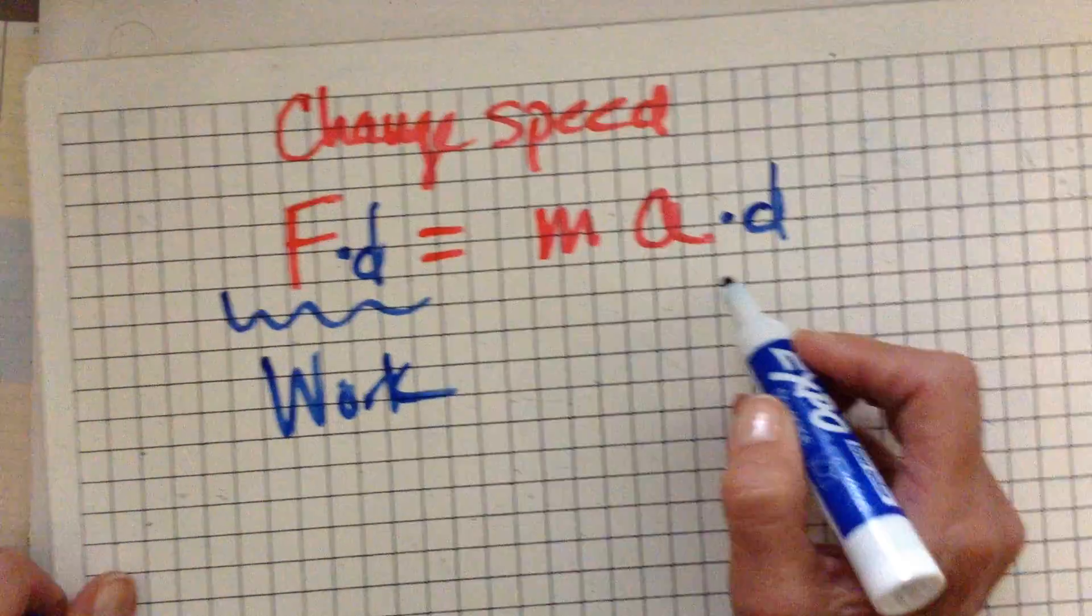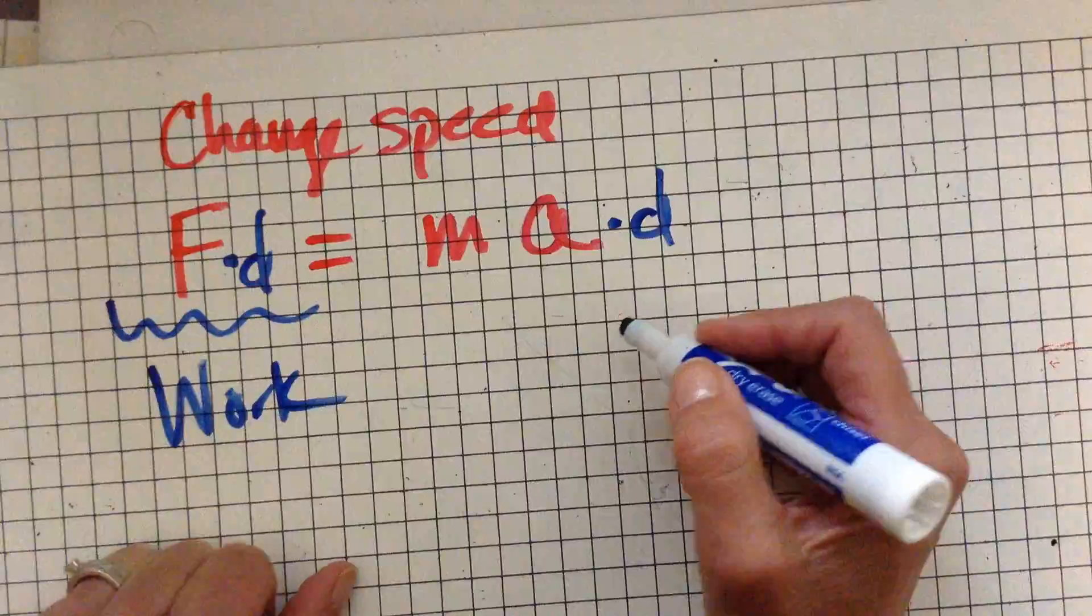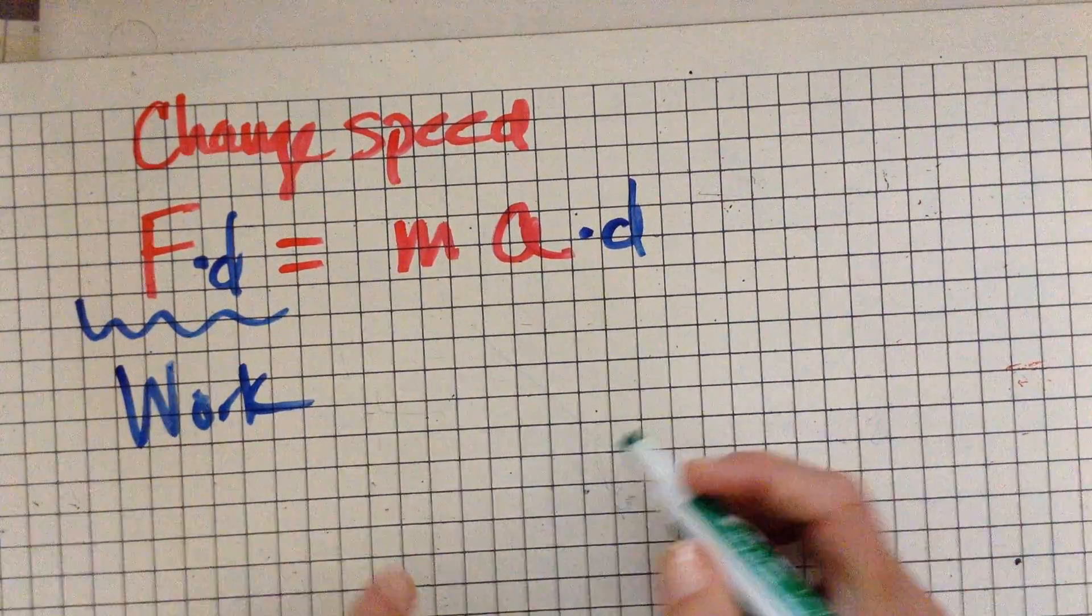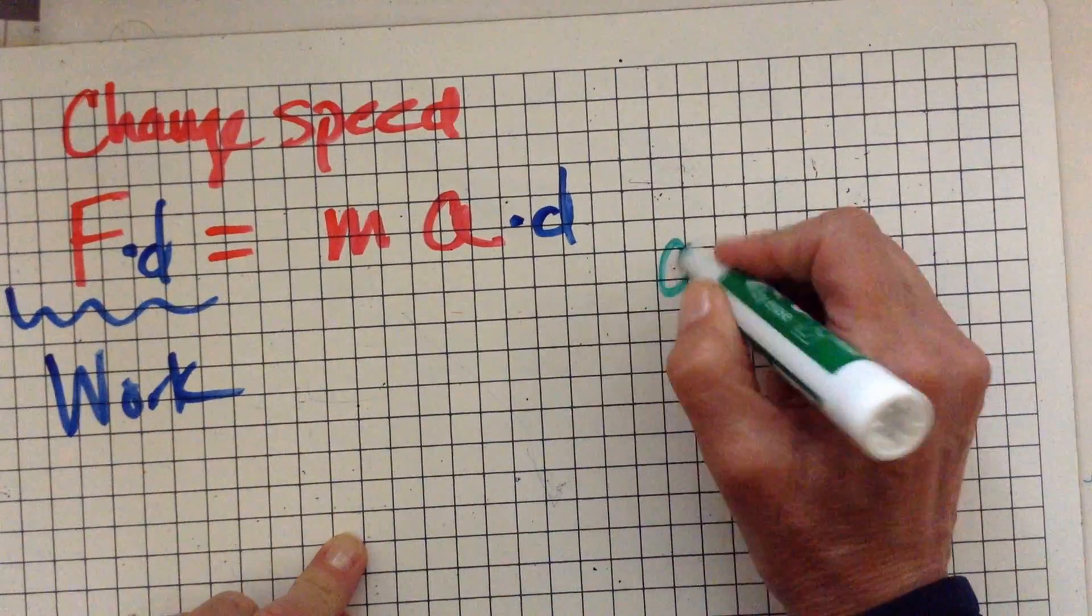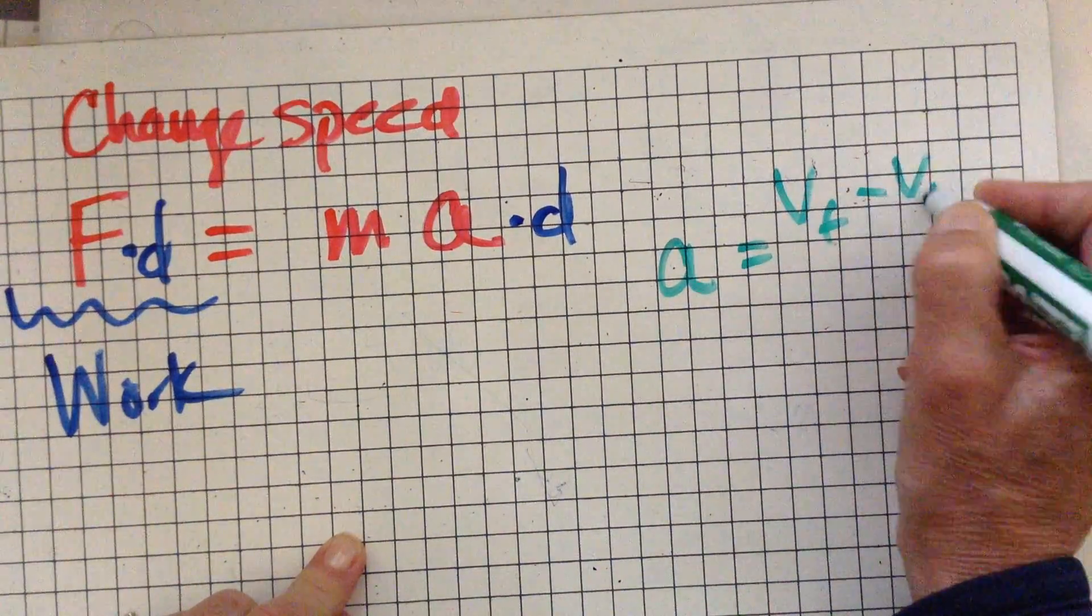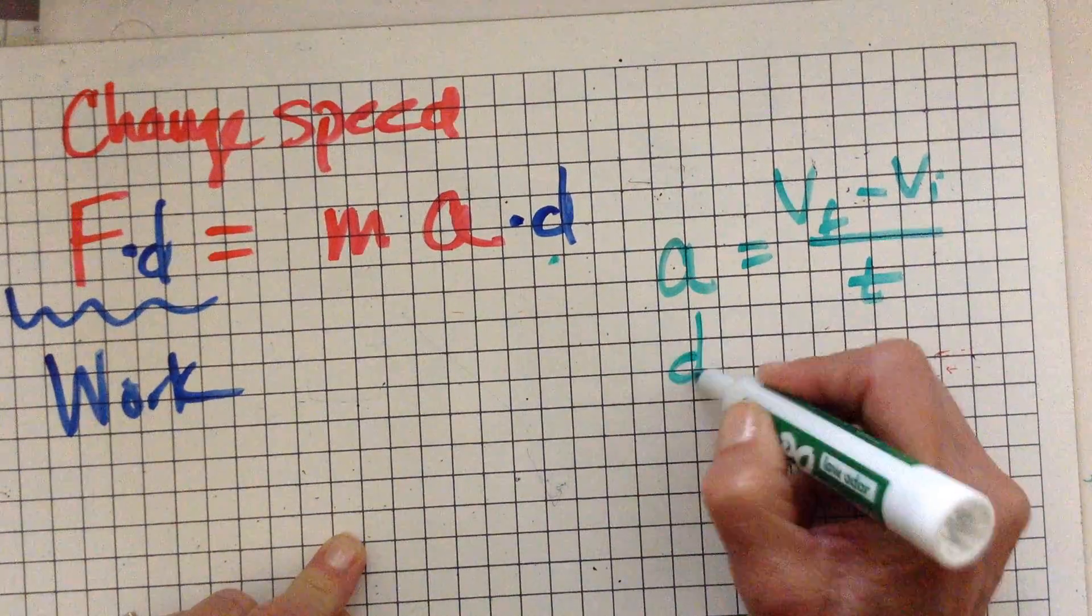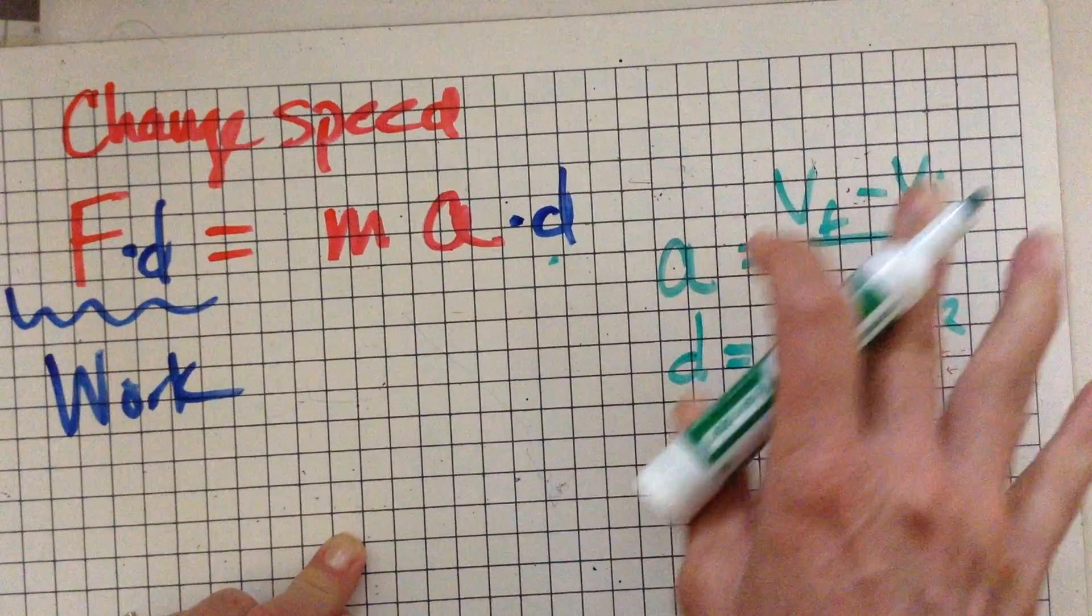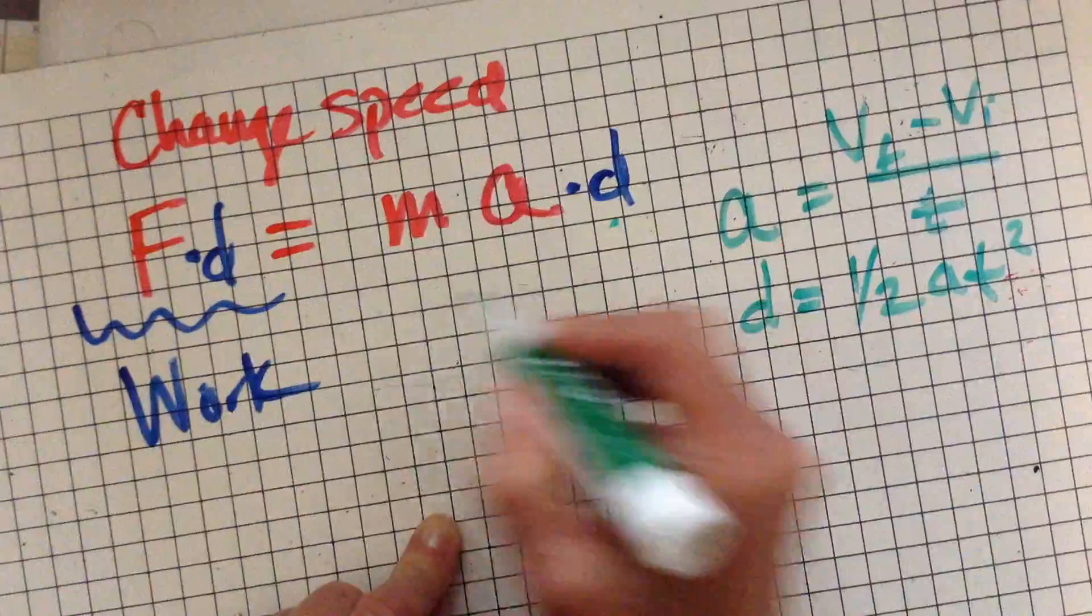And then we get this mad formula over here. It's so mad. But now this is where there's a bunch of algebra that pops in there, and the Hewitt video went through it. So basically, it took other definitions that you guys know, like acceleration is equal to the change in velocity over time. And it also used this how far equation, one half at squared.